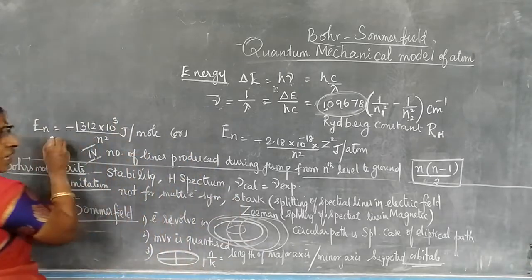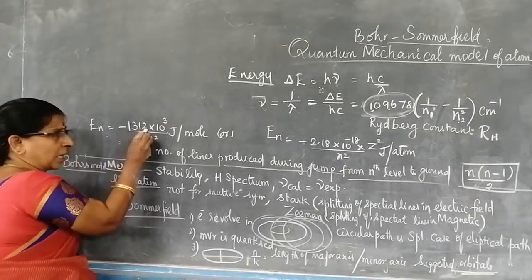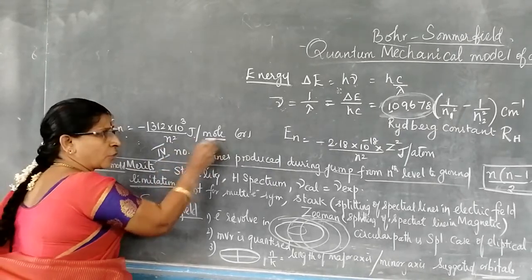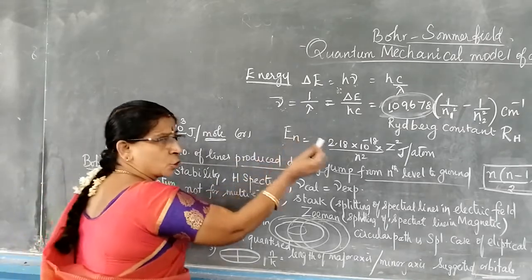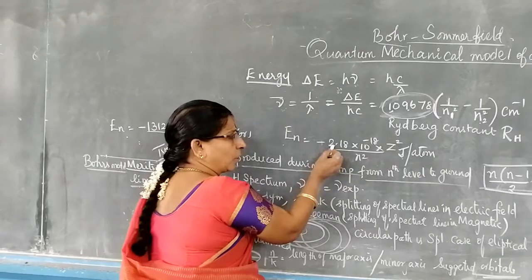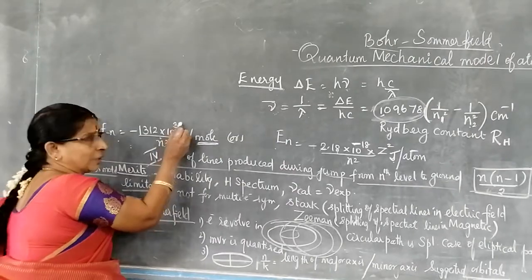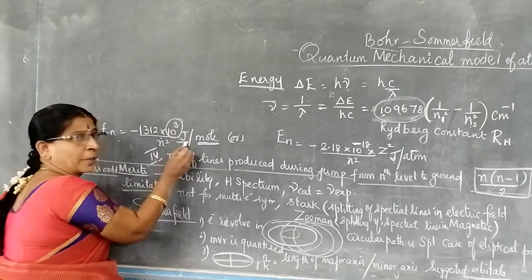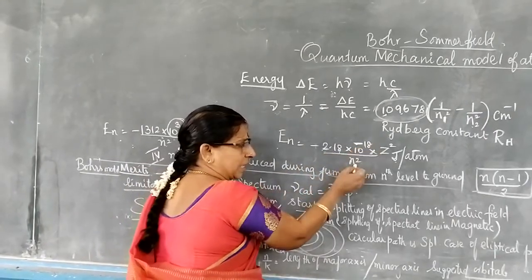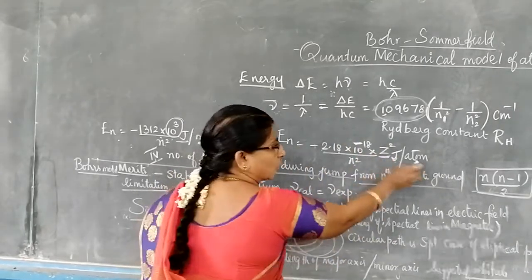The energy is −1312 × 10³/n² joules per mole. When you remove the 10³ factor, it becomes kilojoules. For joules per atom, it is −2.18 × 10⁻¹⁸/n² × z² joules per atom, where Z is the atomic number.